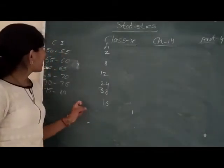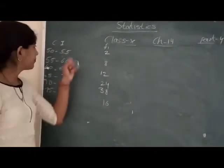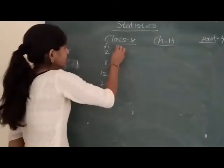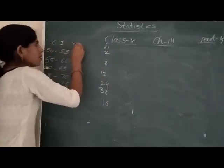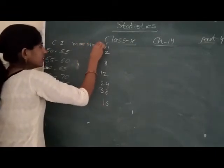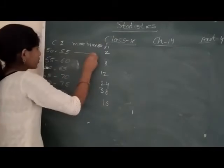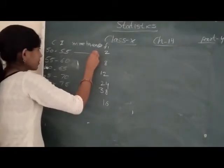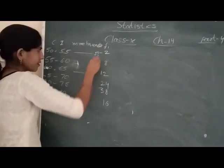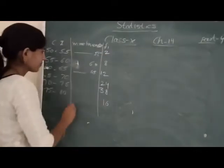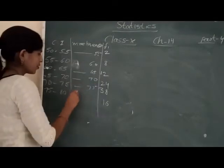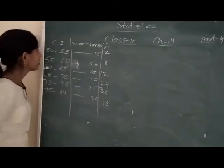Total is hundred. We need to make more than. So what will we make? More than 50, more than 55, more than 60, more than 65, more than 70, more than 75, more than 80. Okay?